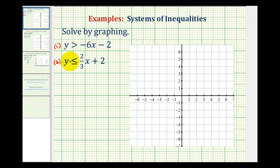Since both of these inequalities are in slope intercept form or the form y equals mx plus b, we can graph both boundary lines by identifying the slope or m and the y intercept or b. For the first linear inequality, we need to recognize that because the symbol is greater than, not greater than or equal to, it's going to be a dashed boundary line and the slope is equal to negative six or negative six over one and the y intercept is equal to negative two.